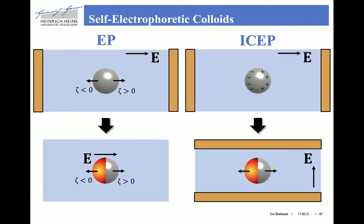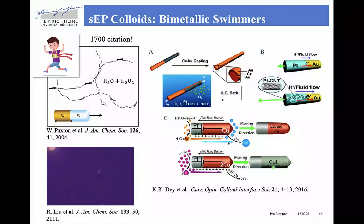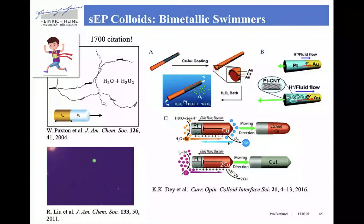The best example of self-electrophoretic colloids are bimetallic swimmers — bimetallic particles in aqueous solution enriched with hydrogen peroxide. These were also the first realization of synthetic active particles, with an article from 2004 which now has more than 1,700 citations. These micro-swimmers were rods made of platinum and gold segments, which were able to swim in hydrogen peroxide solution at velocities of a few microns per second.